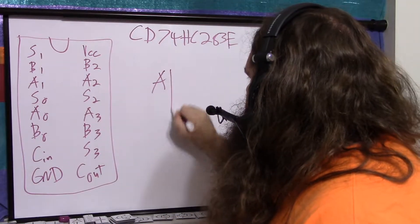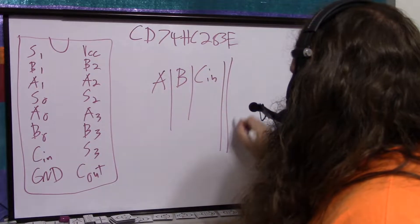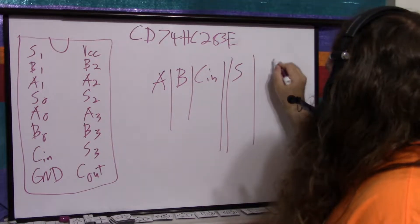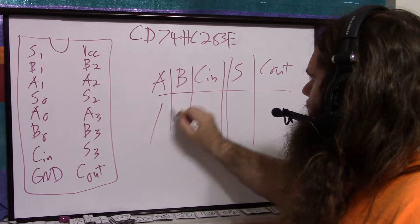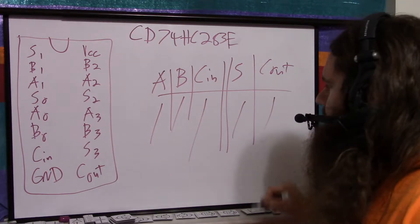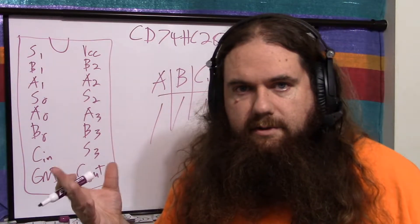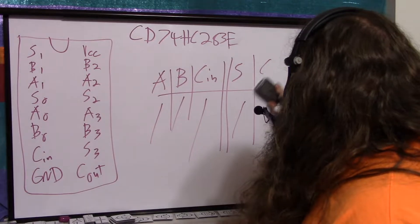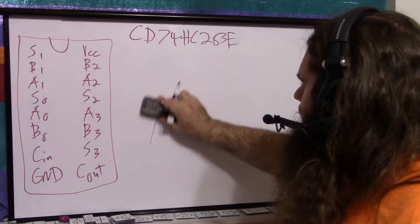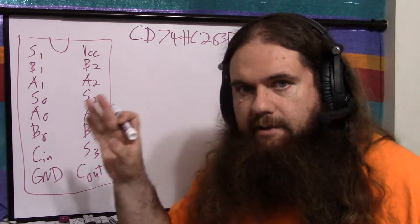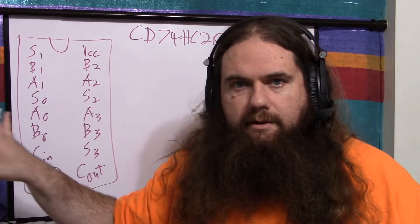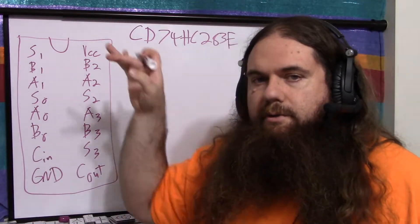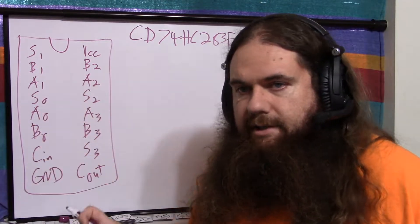So you've got your A and your B and C in, and then your S and C out. And you would just set your inputs, and for each input you'd have outputs, set up the transistors, the gates, and you're done. But you have to wait for the carry to be fully computed by propagating the voltage through all the transistors before you can do the next one, before you can go to the next chip.